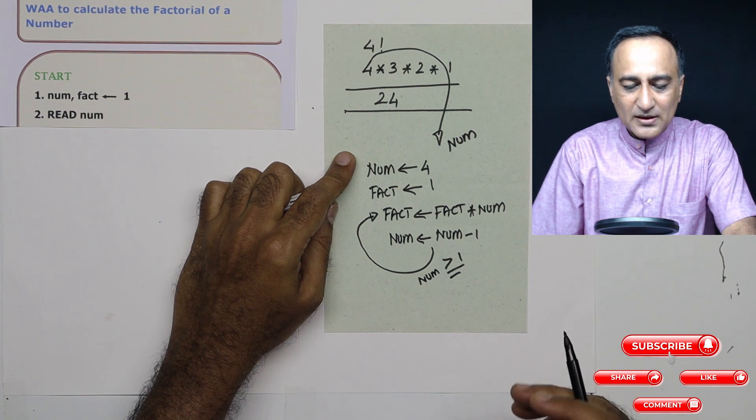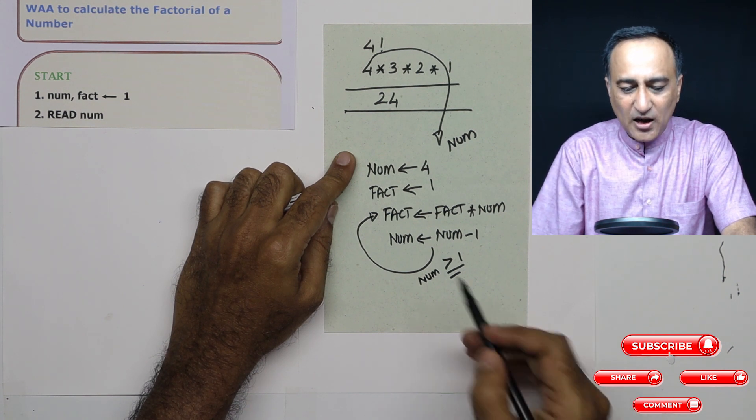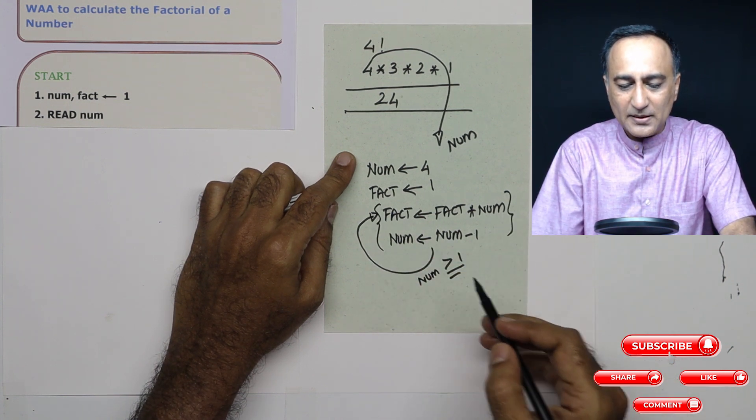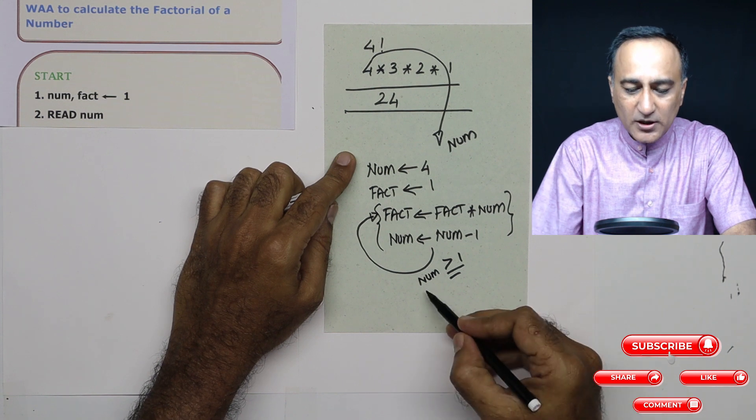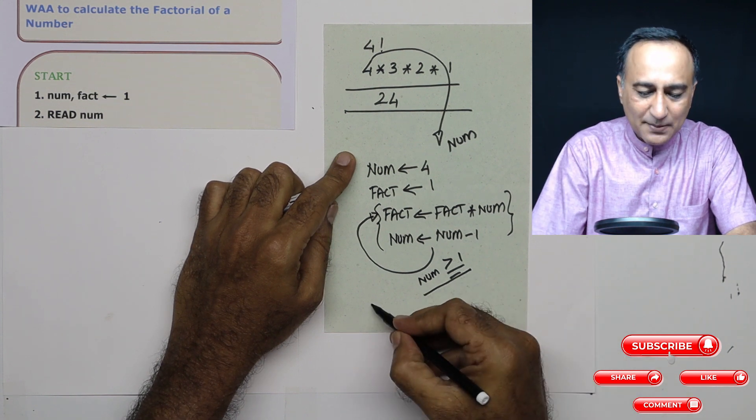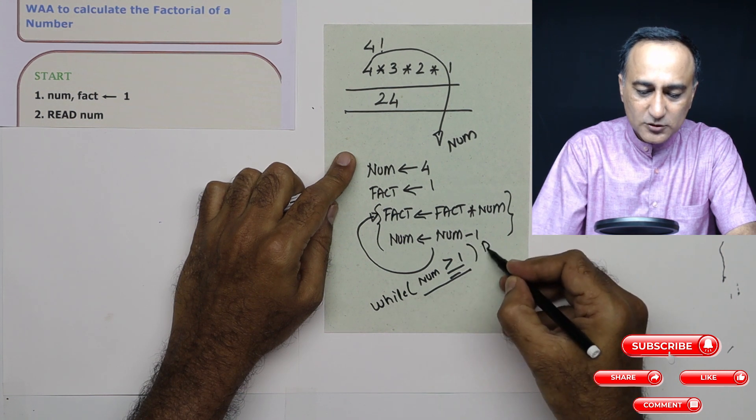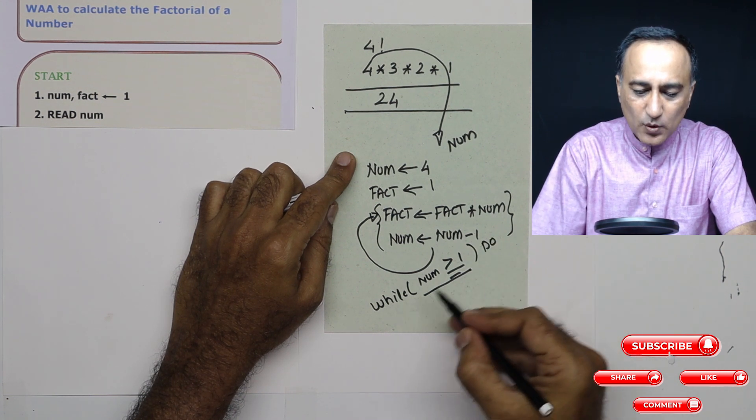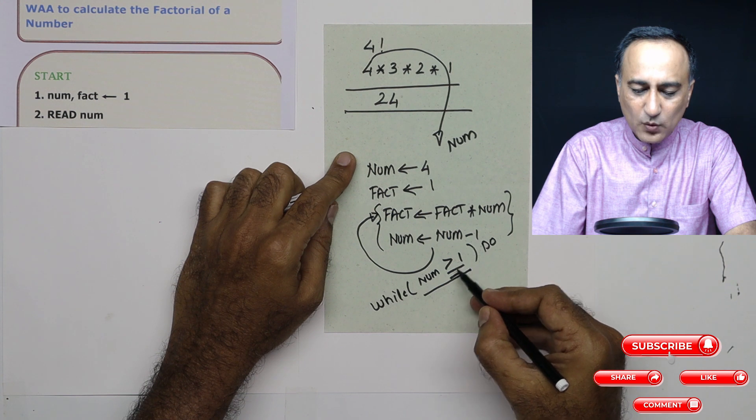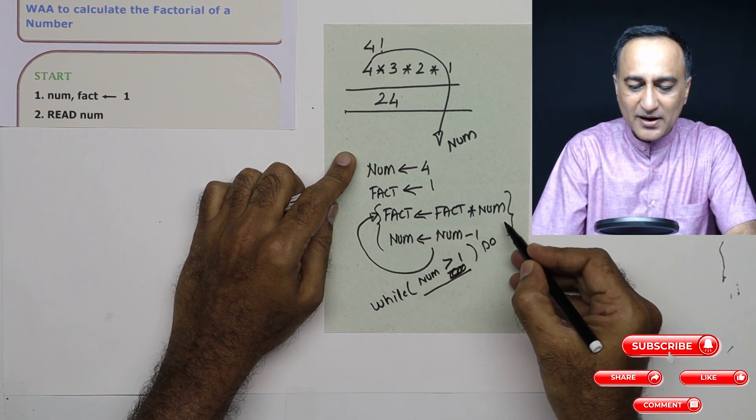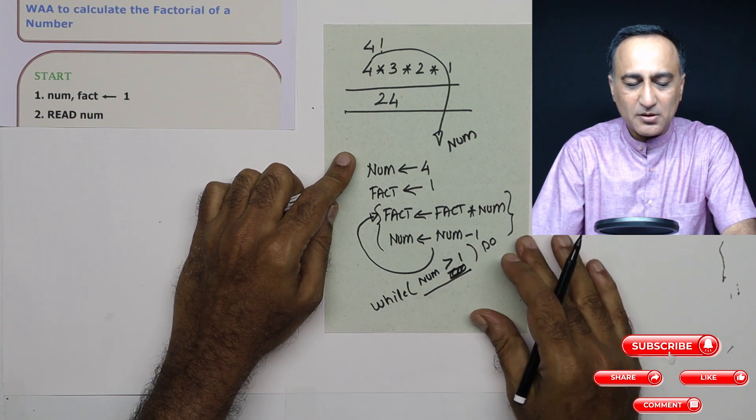Now, you need to first understand how long are you going to do this particular multiplication fact is fact into num and number is number minus one. You will keep doing it as long as number is greater than or equal to one. So what you will do is you will say while number greater than one, you will keep doing this step of multiplying fact into num and number is number minus one.